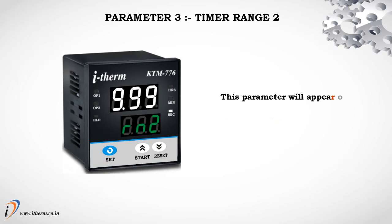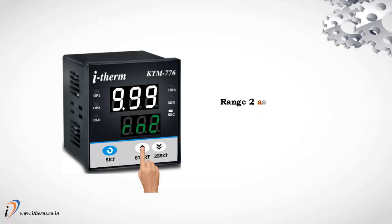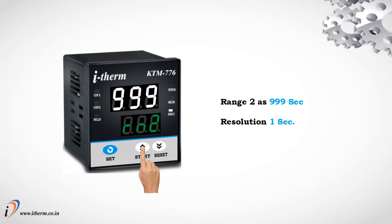Parameter 3: Timer Range 2. This parameter will appear only if the selected timer function is Cycle 1, Cycle 2, or Cycle 3. It sets the timing range and resolution for parameter Set Time 2. Range options: 9.99 seconds with resolution 0.01 seconds; 99.9 seconds with resolution 0.1 seconds; 999 seconds with resolution 1 second.